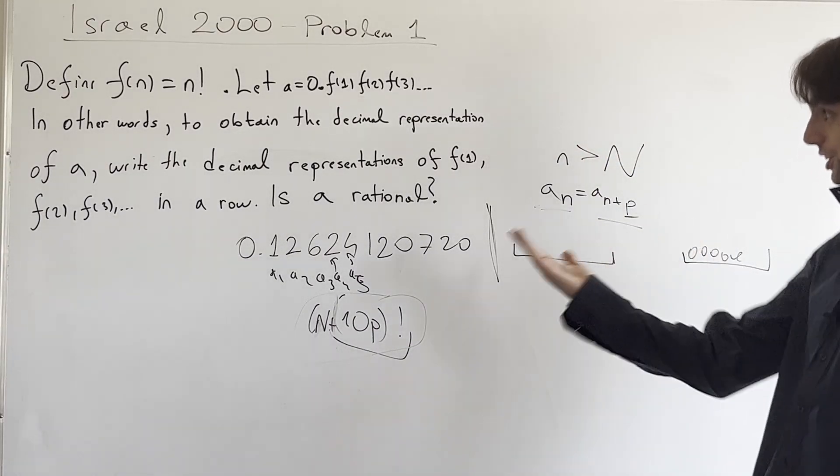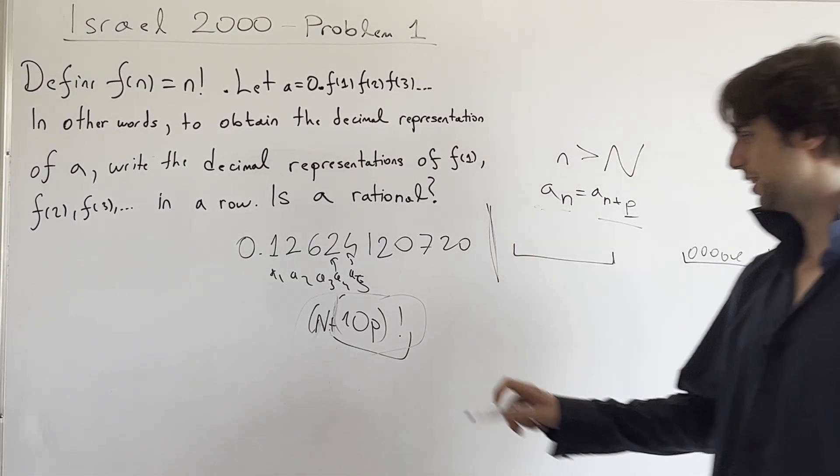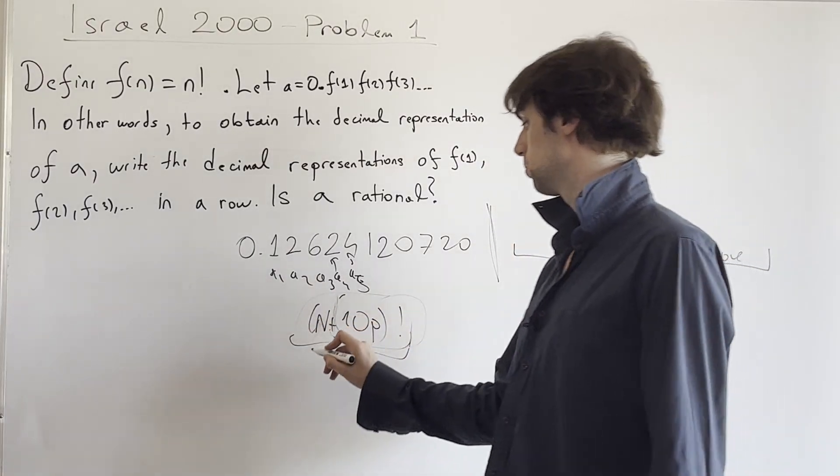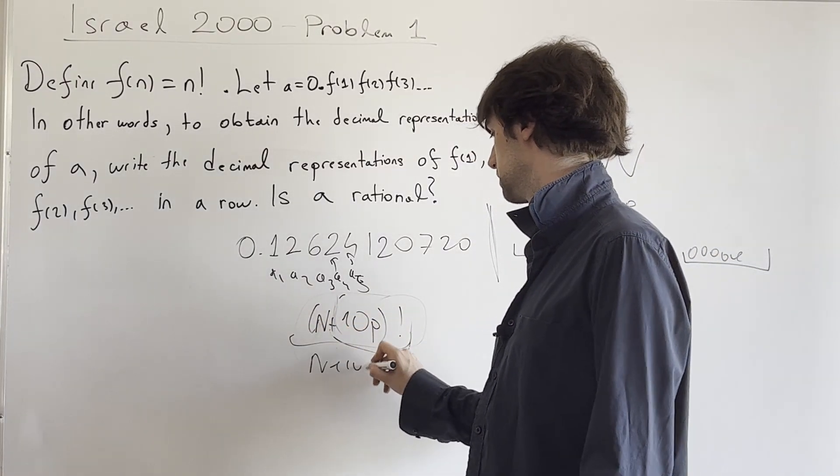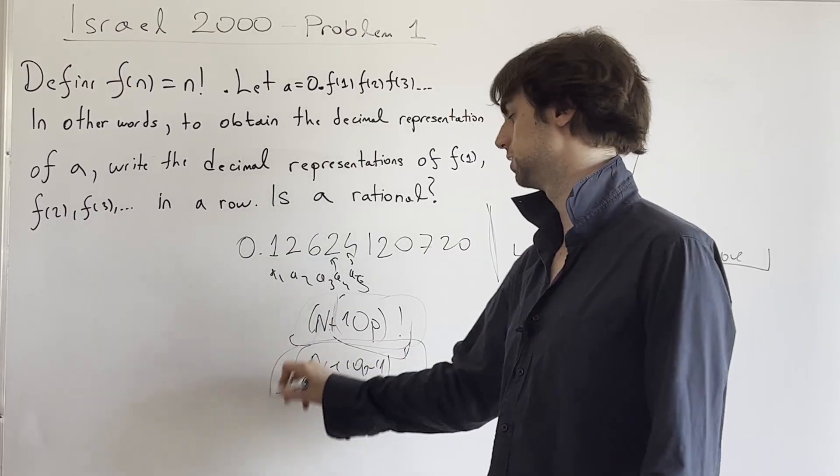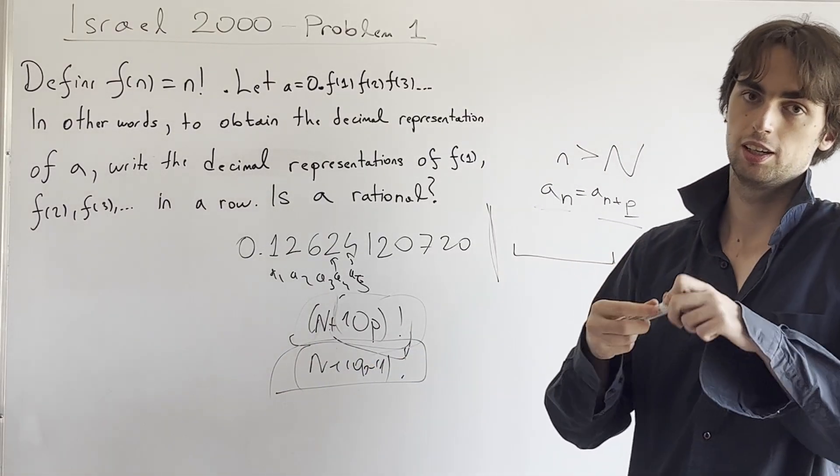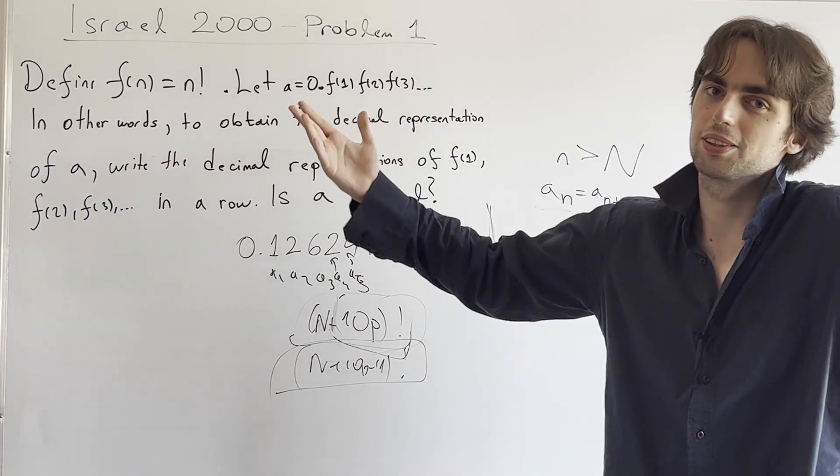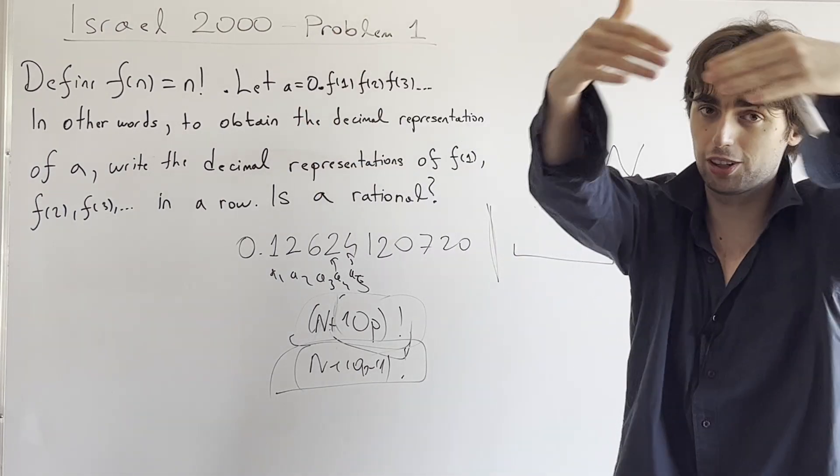Because the first digits of this number, or say, what's it called for? N plus 10P plus 1, also has digits in sequence. And the first digit here starts with a non-zero digit, is non-zero, and ergo, a contradiction.